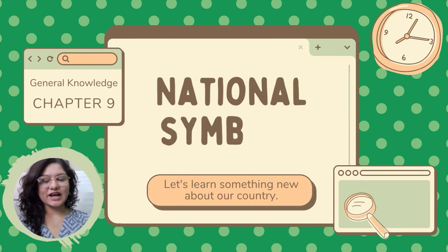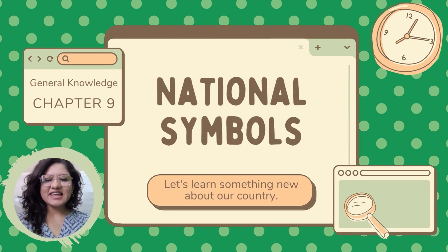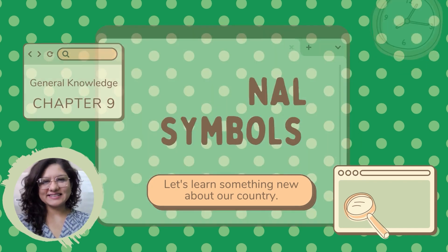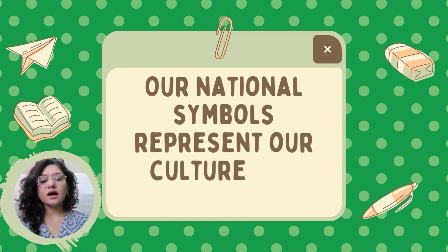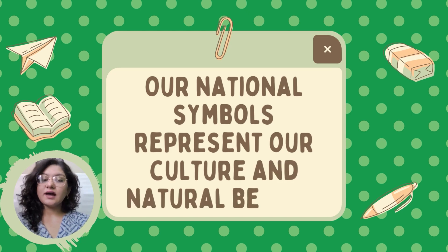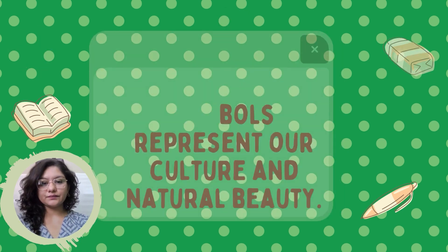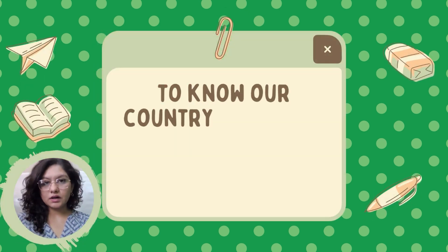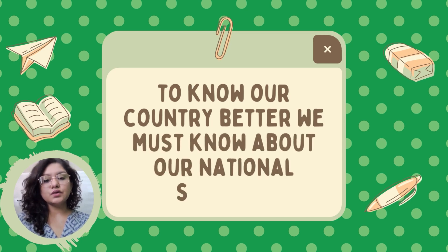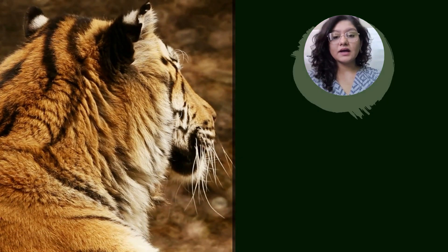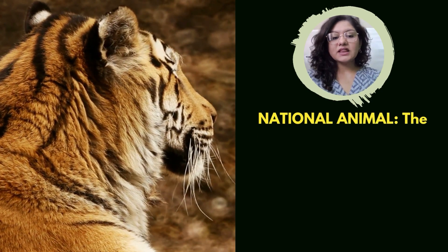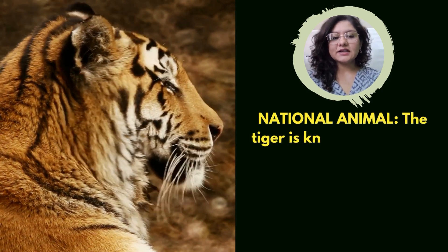General knowledge, chapter 9: national symbols. Let's learn something new about our country. Our national symbols represent our culture and natural beauty. To know our country better, we must know about our national symbols. The national animal — the tiger — is known